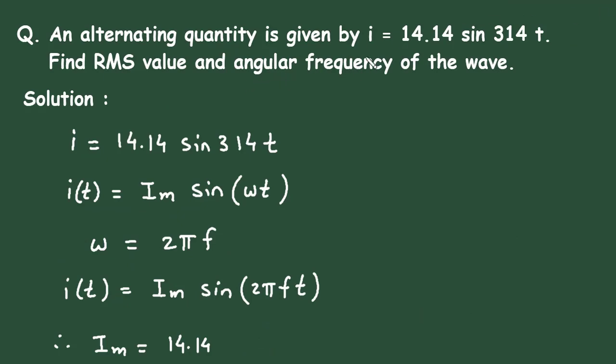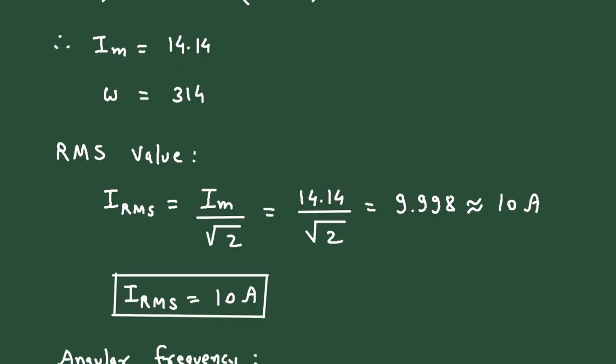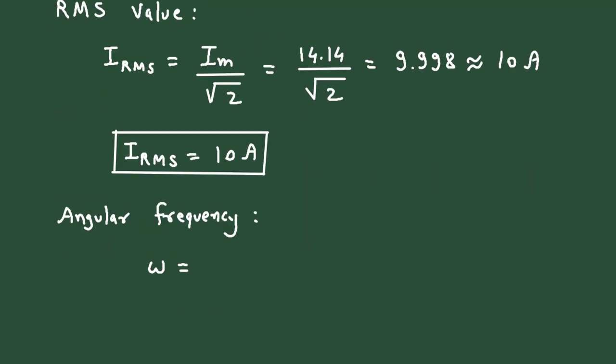Then, next we have to find angular frequency. Angular frequency is denoted by omega. We know that omega equals 314, and its unit is radian per second. Therefore, omega equals 314 radian per second.